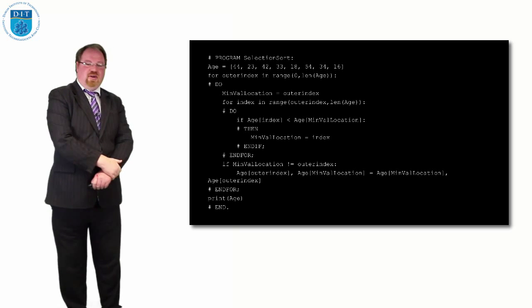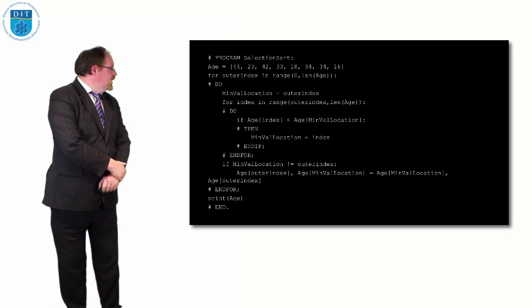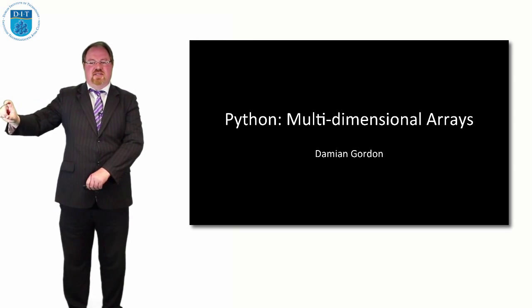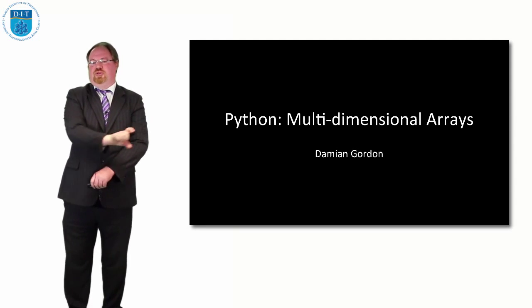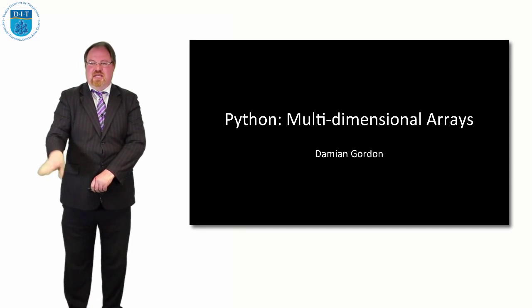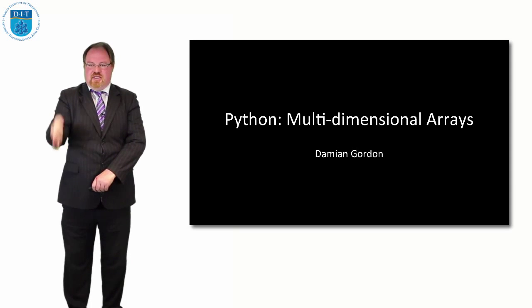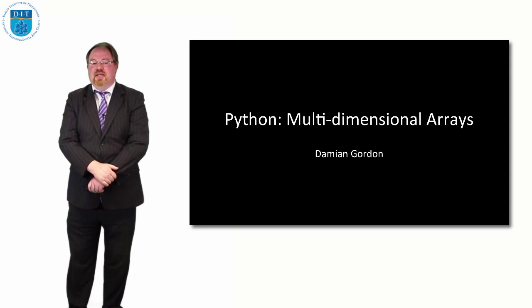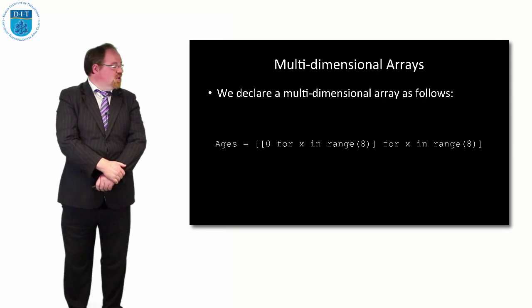Perfect. So that's selection sort. Let's look at now how Python implements multi-dimensional arrays. We know we can have a list going across, we can also have columns as well as rows. If we think about when we did matrices in math, a matrix has rows and columns. So that's like a multi-dimensional array. It has both dimension down and dimension across.